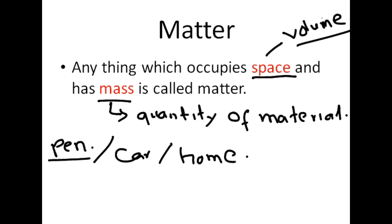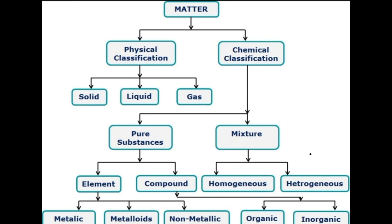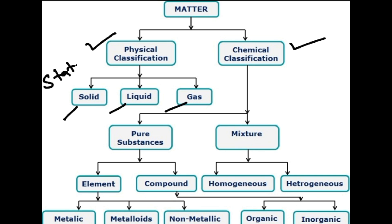Now if we look at the classification of matter, we have a simple chart to understand it. Matter is classified into physical classification as well as chemical classification. In the physical classification, we observe things like solid, liquid, and gas — these are called the states of matter.